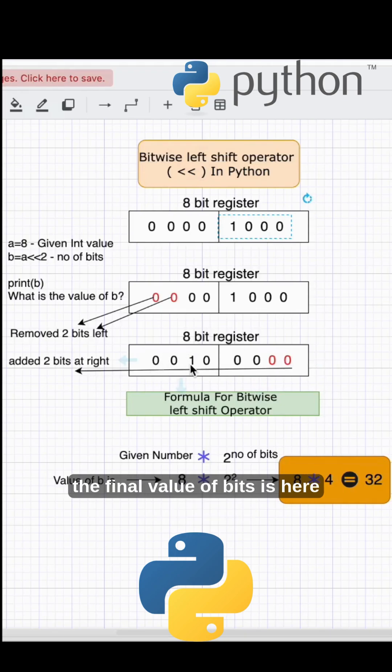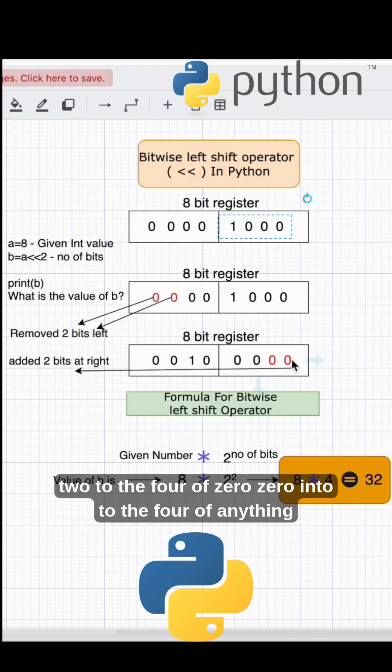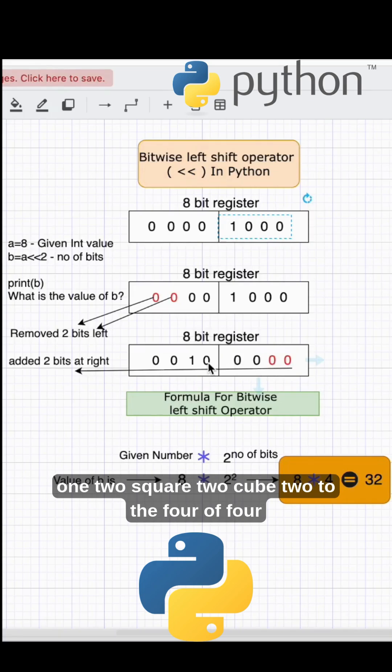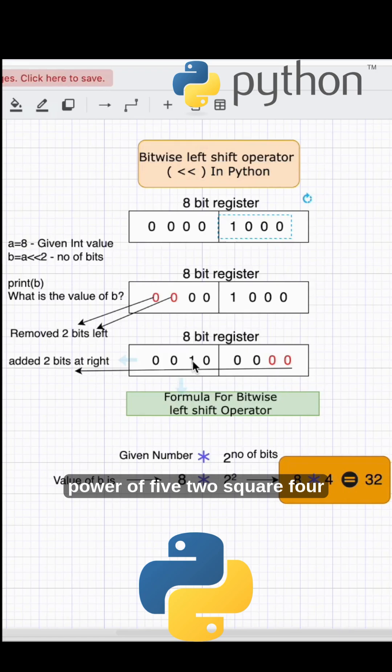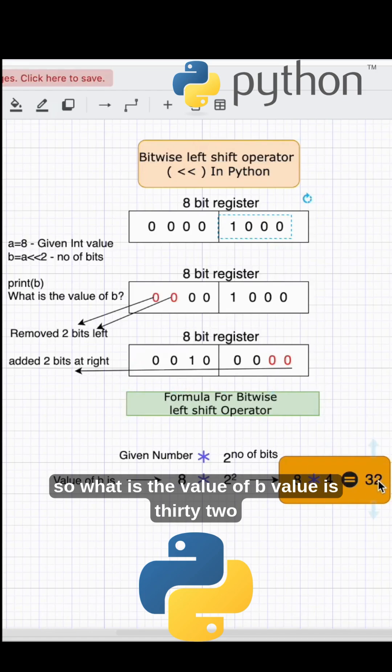So the final value of bits is here. Now we can calculate this value: 2 to the power of 0 is 0, 2 to the power of 1, 2 squared, 2 cubed, 2 to the power of 4, 2 to the power of 5. What is the value of 2 to the power of 5? 2, 4, 8, 16, 32. So the value of b is 32.